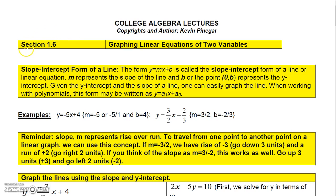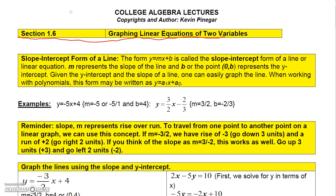In section 1.6 of my video lectures we're going to talk about graphing linear equations of two variables. We've already talked a little bit about graphing lines, but we're going to get deeper into it in this section. We're going to talk about several forms of a line. The first thing I want to talk about is the slope-intercept form of a line, which is when you write the line as y equals mx plus b.